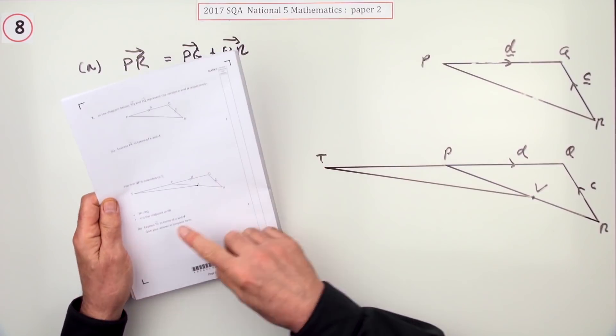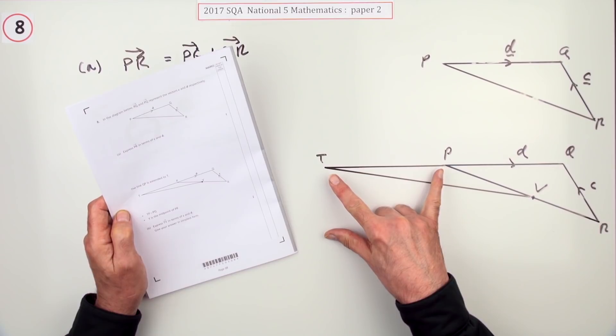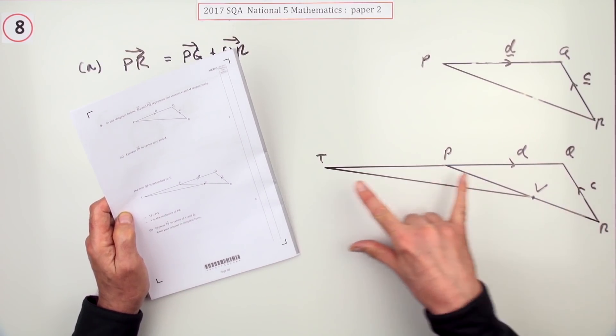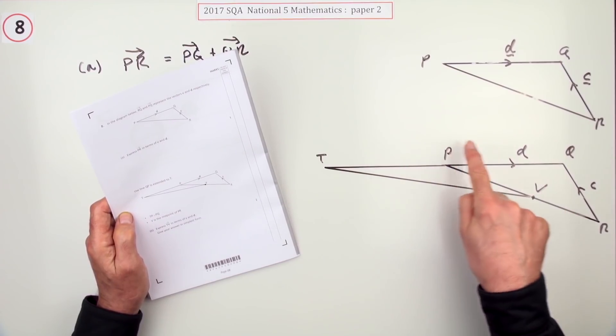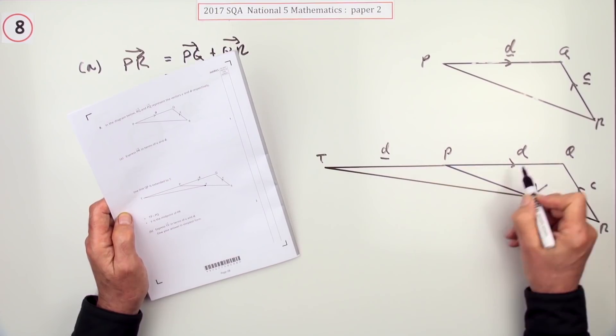And in part b this additional point has been added on and it says TP is the same as PQ. If the length's the same and the direction's the same, it means it's the same vector, so that's also vector d.